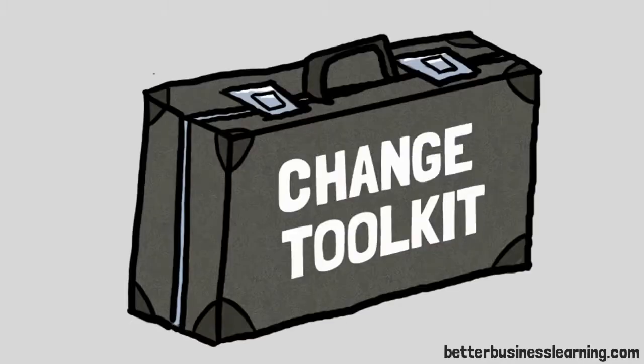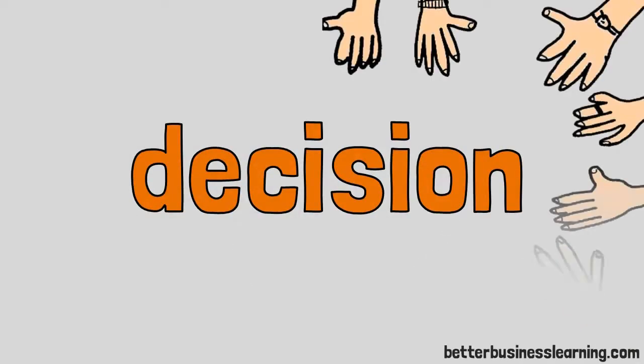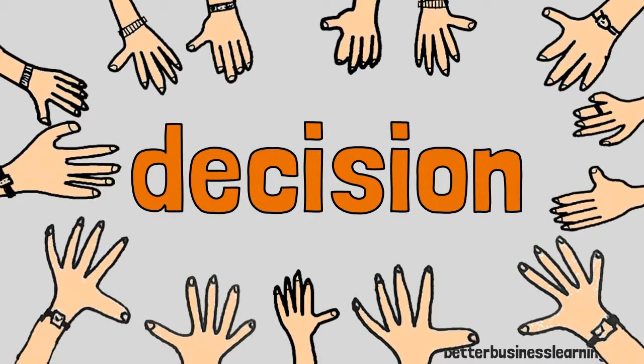Here's some things that we know that help this happen. Number one, communicate the threat of not changing. Number two, where possible, involve your team in decision making.